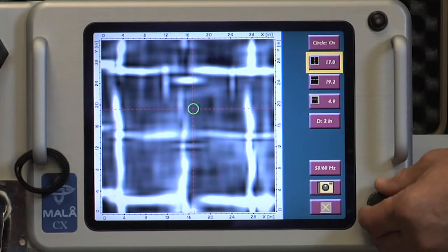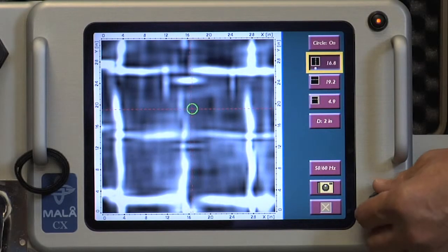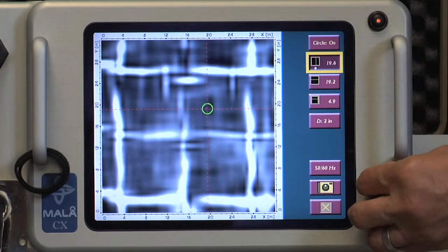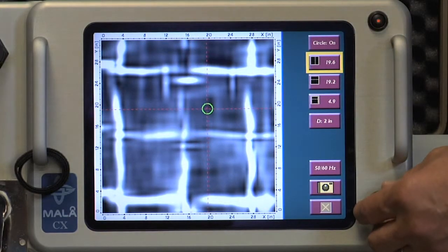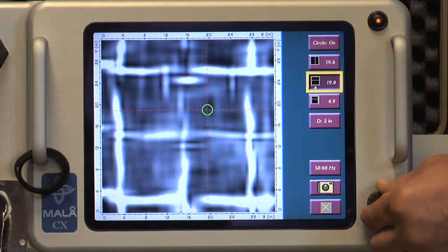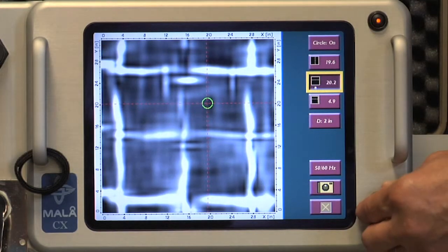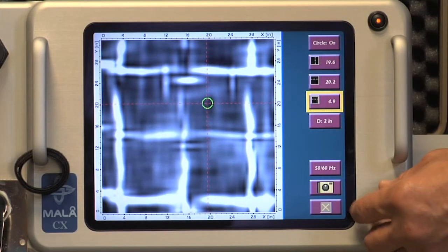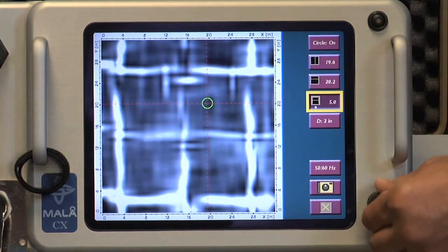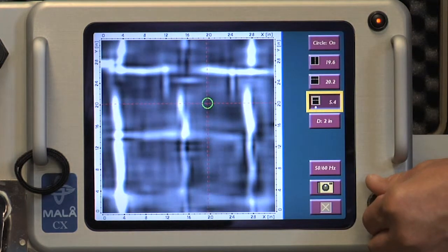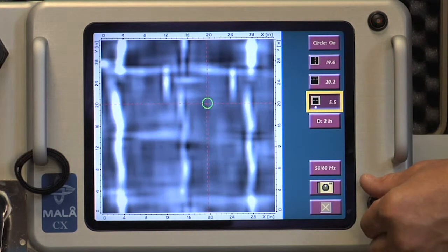Now use the X and Y icons to place a crosshair over an object or areas that are clear of any objects. Select the circle icon to place a virtual core hole over a location that may be desirable to core. Adjust the size of the drill locator to the size of the intended core to give an indication of what the actual core might intercept.